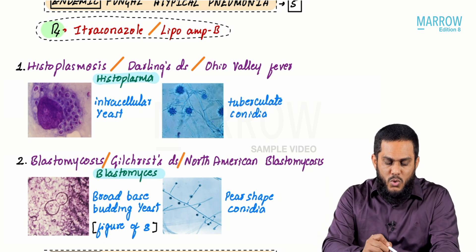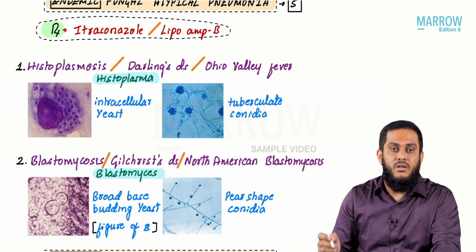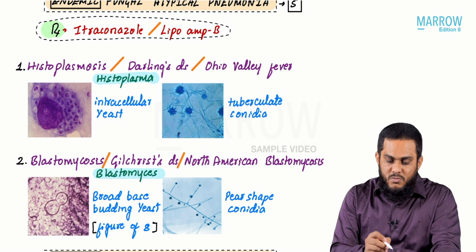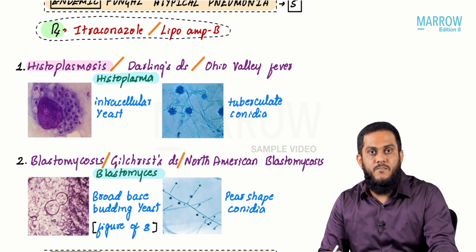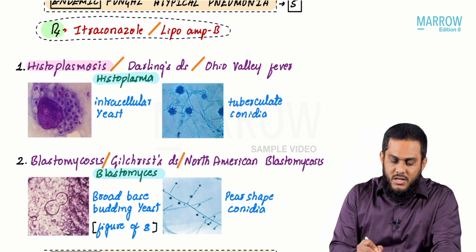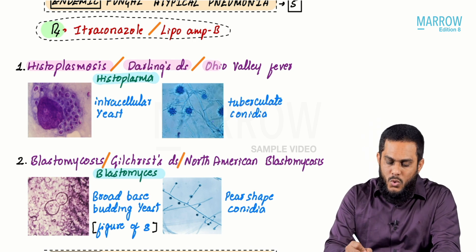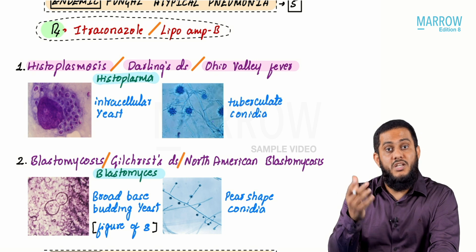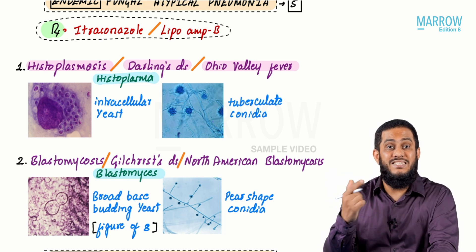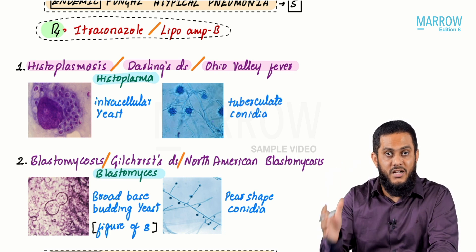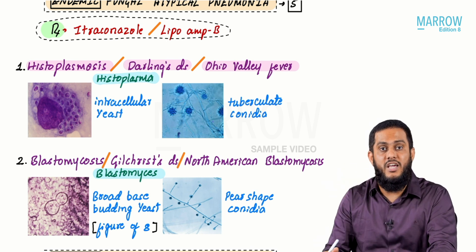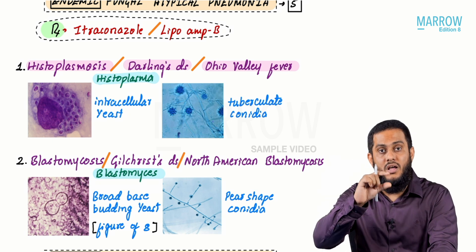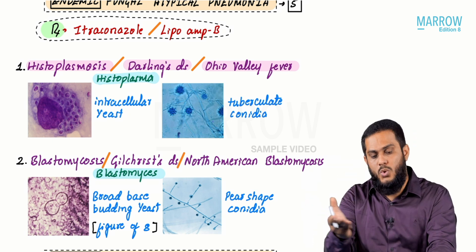Histoplasma causes pneumonia known as histoplasmosis, also called Darling's disease — named after Dr. Darling who first described it — and also known as Ohio Valley fever because it is most commonly seen along the Ohio Valley.